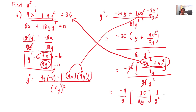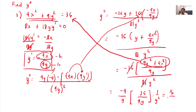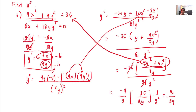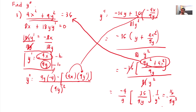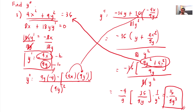So the answer here is negative 16 all over 9y cubed.